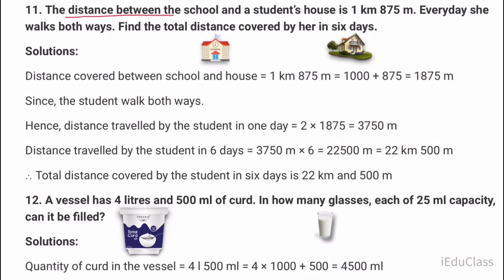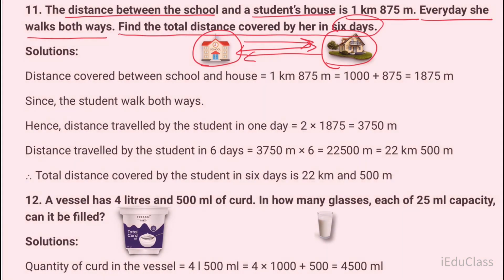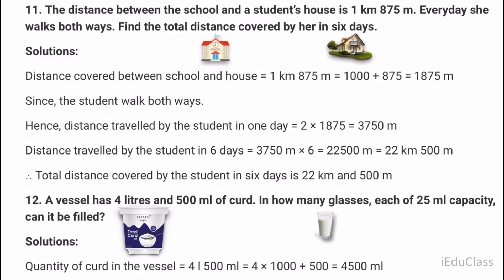Question number eleven: The distance between the school and a student's house is 1 kilometer 875 meters. Every day she walks both ways. Find the total distance covered by her in six days. Solution: Distance covered between school and house is 1 kilometer 875 meters equals 1875 meters. Since the student walks both ways, distance traveled in one day is 2 times 1875 equals 3750 meters.